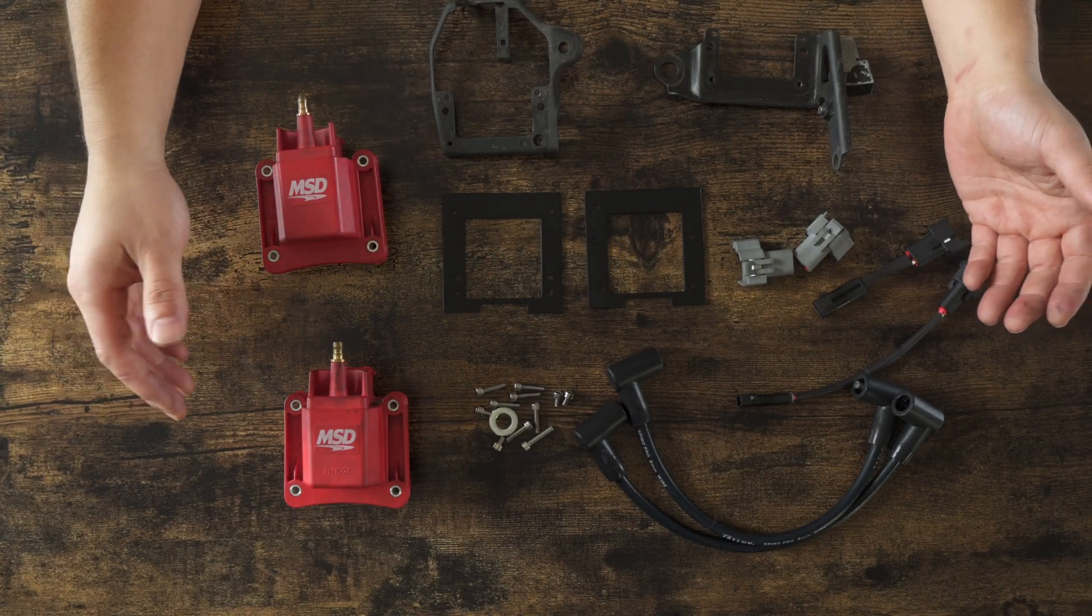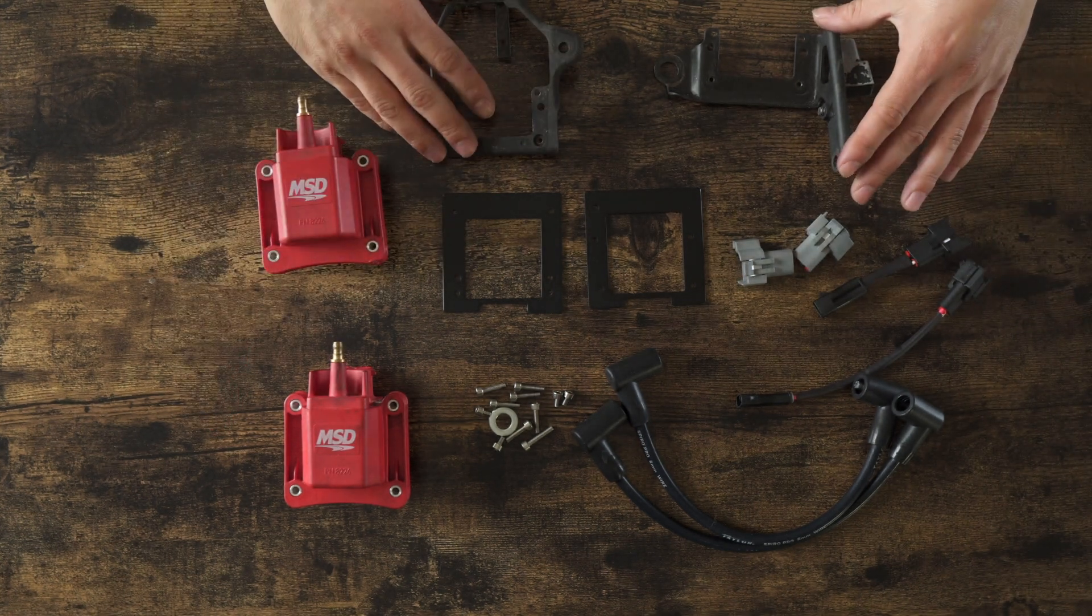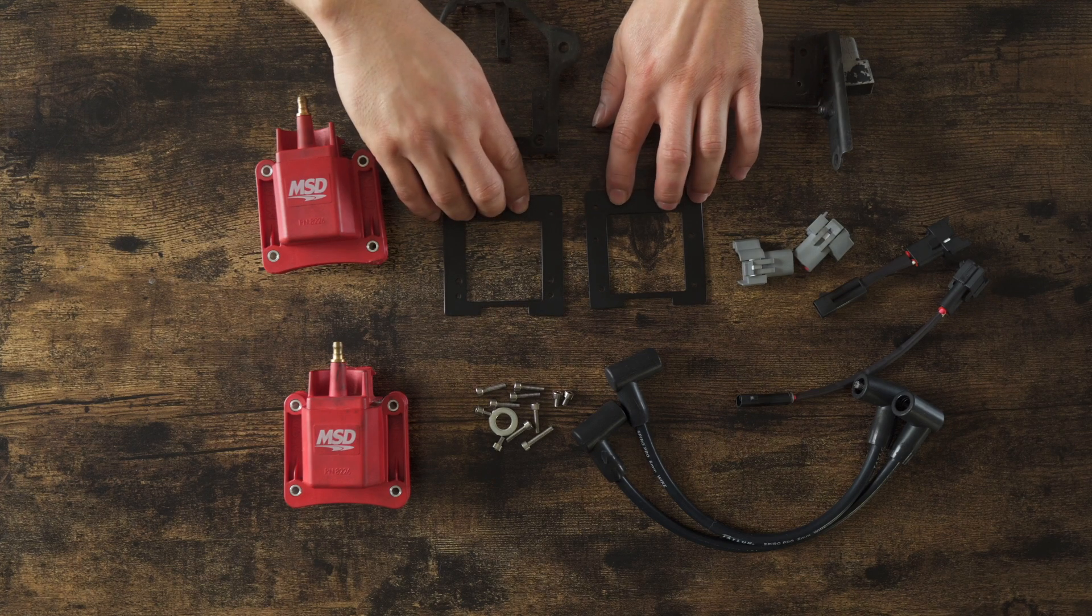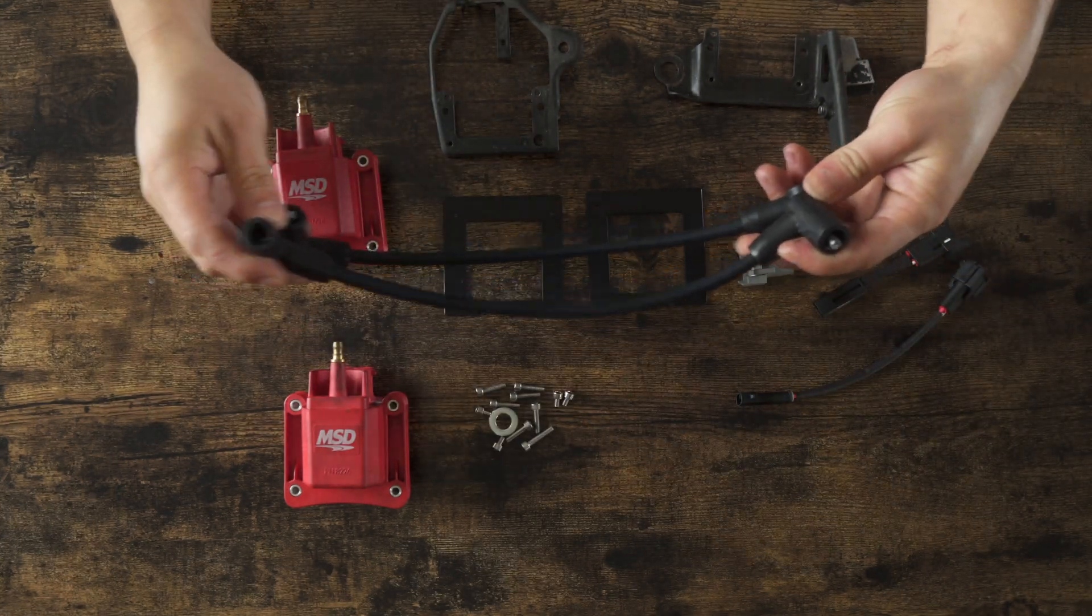Okay, so first, before we start, I want to show you what comes in the kit for the first generation 1UZ MSD kit. So you have two powder-coated adapter brackets, one with six holes, one with five. You get two spark plug wires that are equal length.